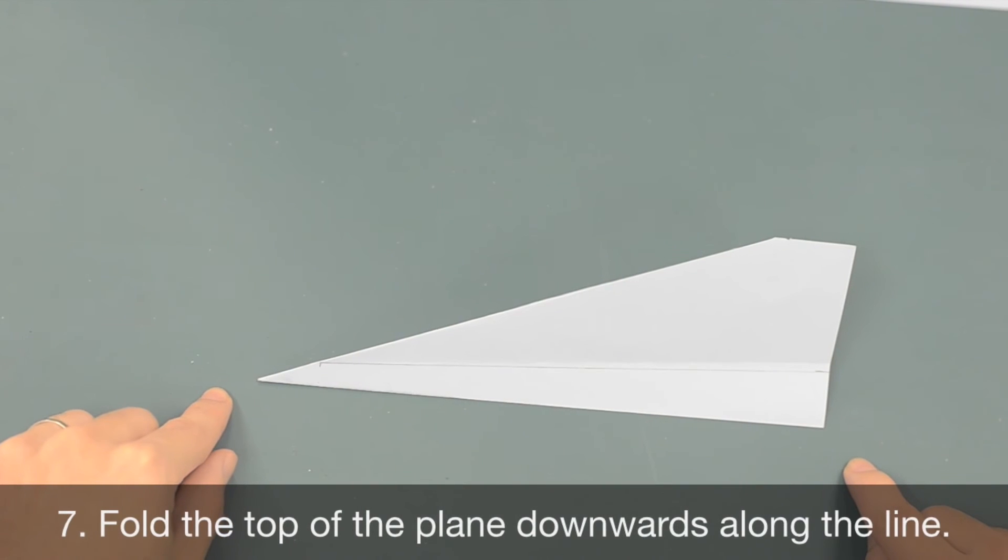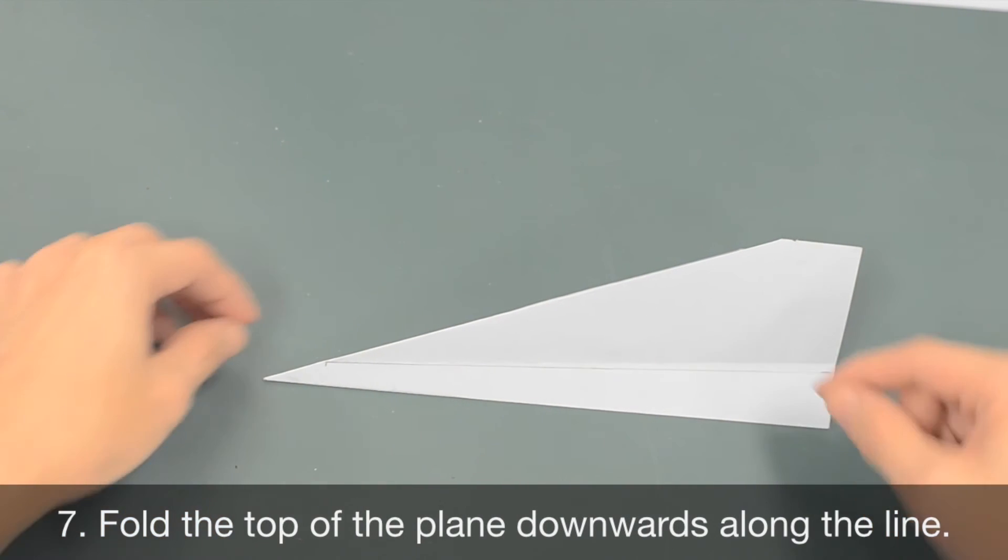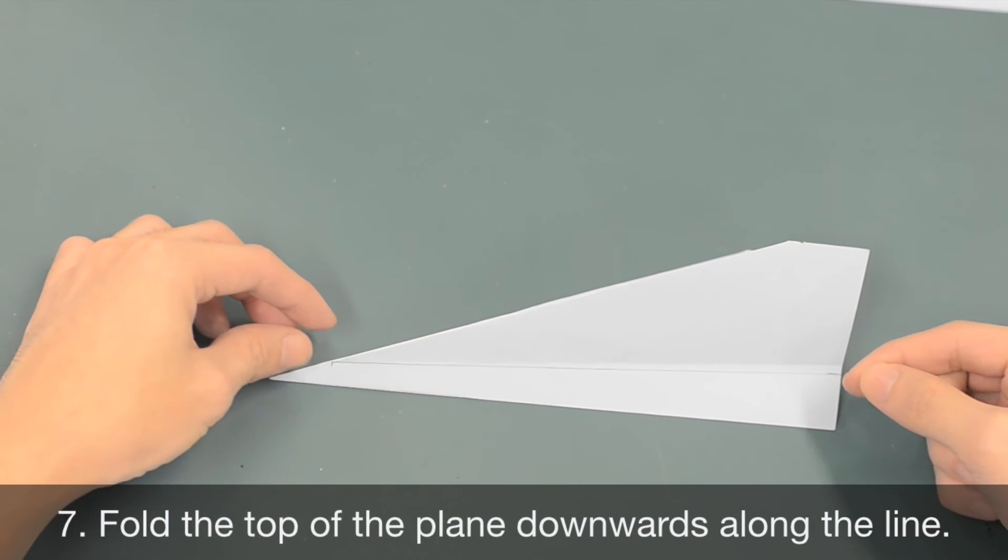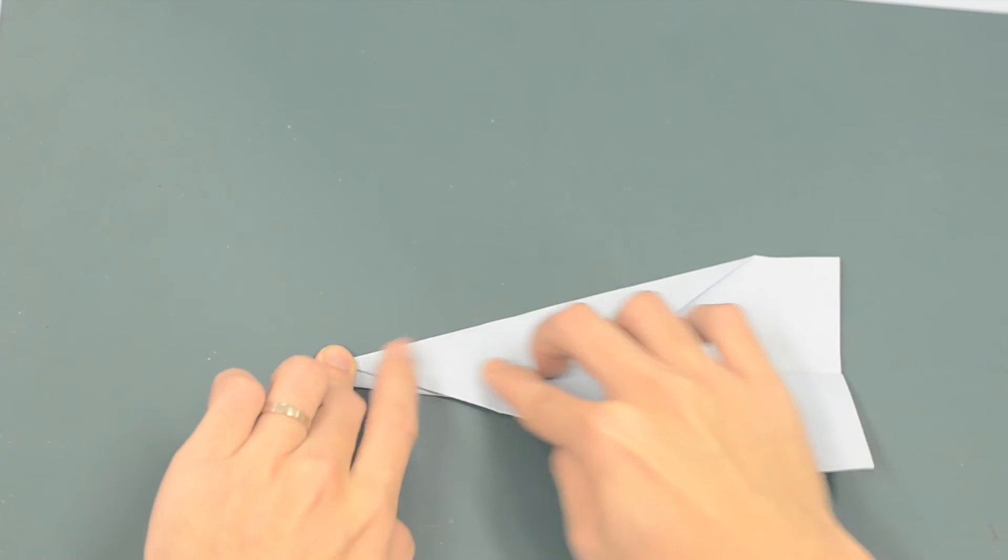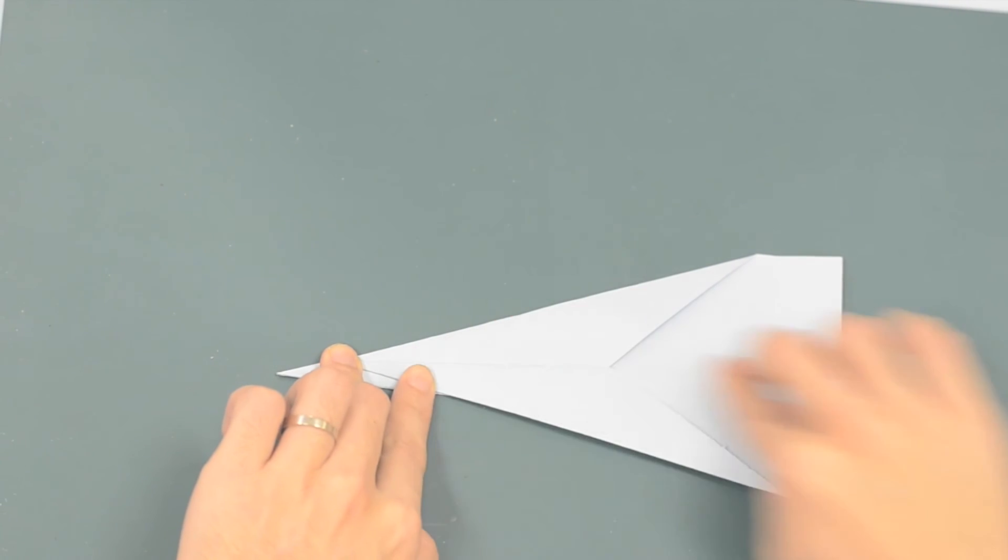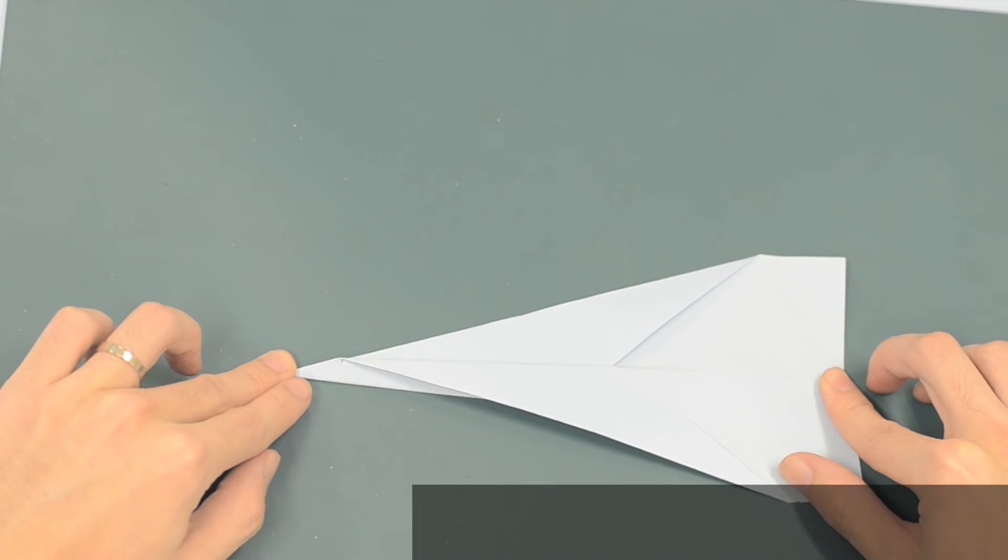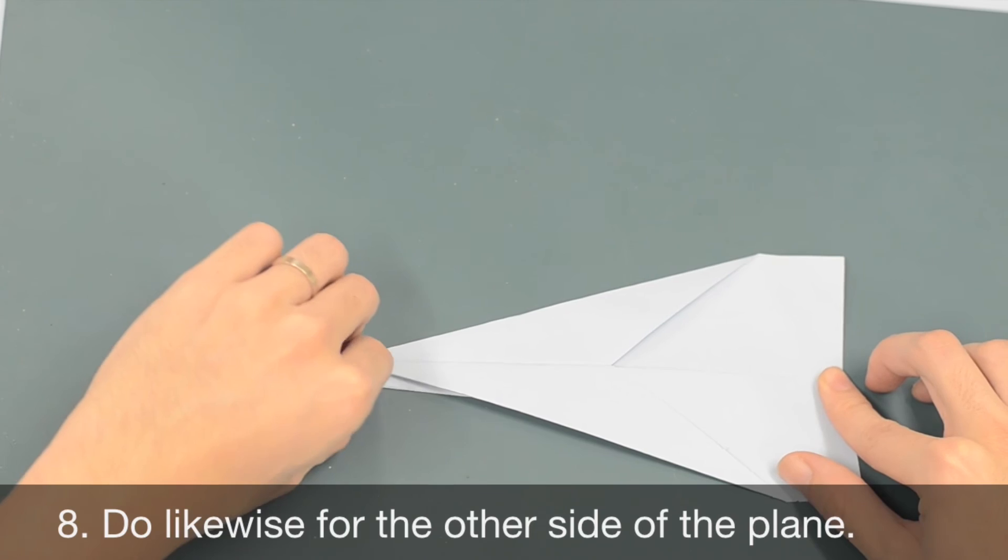Lastly, fold the top of the plane downwards along the line from these two markings. Do likewise for the other side of the plane.